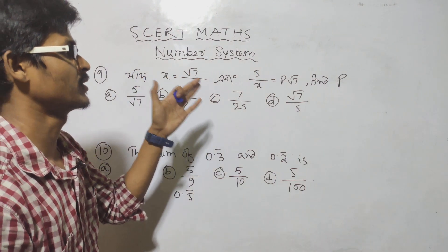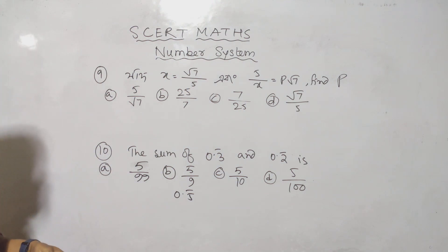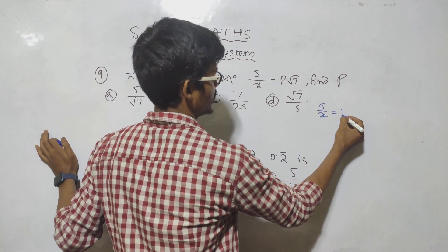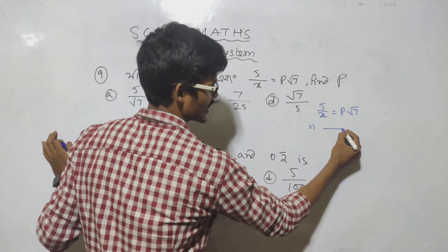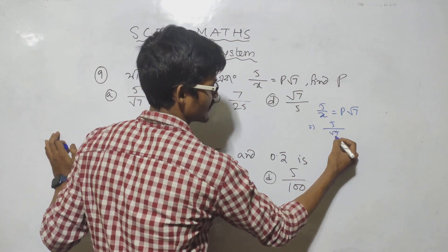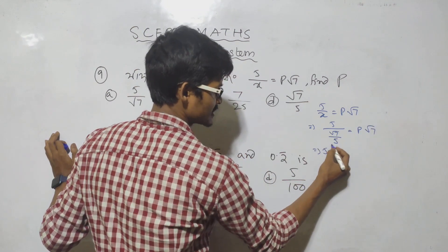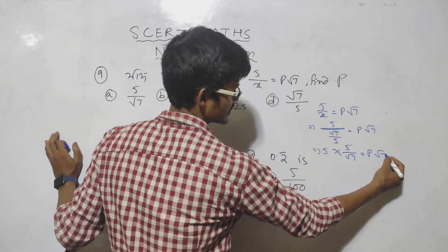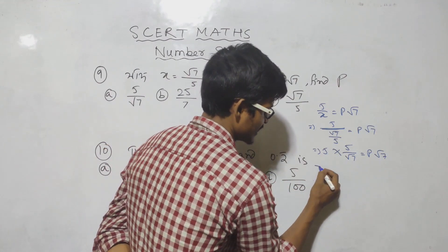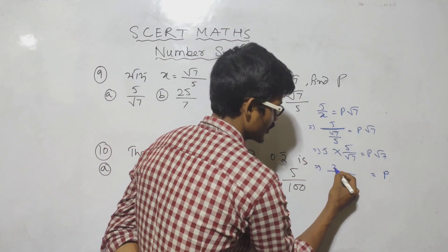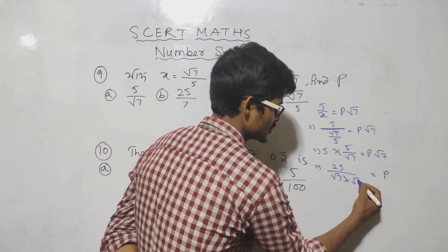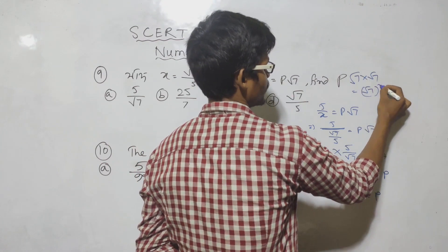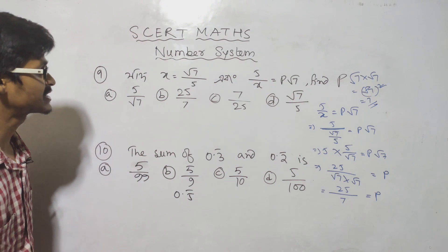Next: x equals root 7 by 5, and 5 by x equals p root 7. Find p. Since p equals 5 by x, we substitute x equals root 7 by 5. So 5 divided by root 7 by 5 gives 5 into 5 is 25, and root 7 into root 7 is 7. Therefore p equals 25 by 7, which is option B.